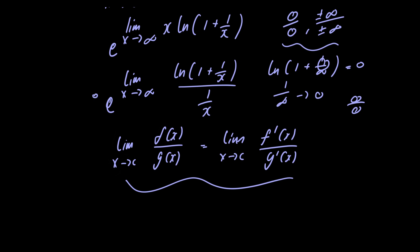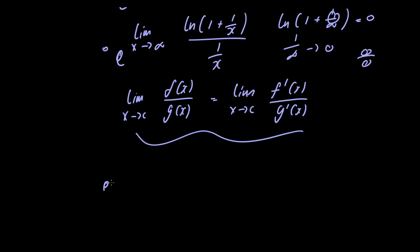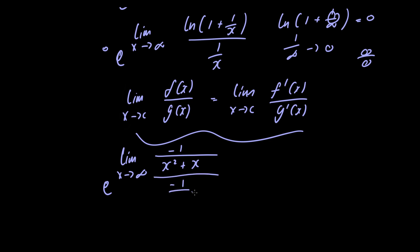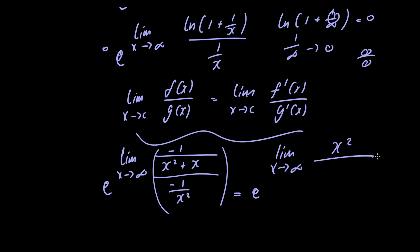Applying L'Hôpital's rule, we have e raised to the limit as x approaches infinity. The derivative of the natural logarithm of 1 plus 1 over x is minus 1 divided by x squared plus x, and the derivative of 1 over x is minus 1 over x squared. Simplifying this gives us e raised to the limit as x approaches infinity of x squared divided by x squared plus x.